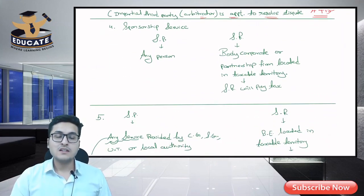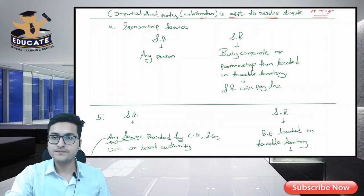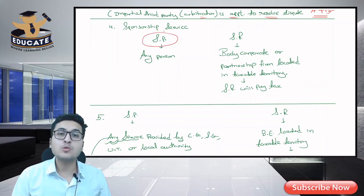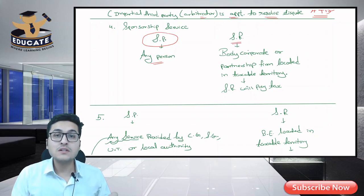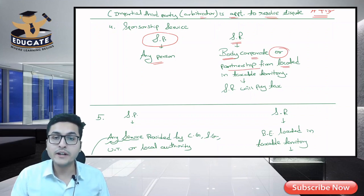Next is sponsorship service. Who is the service provider? The service provider can be any person. Who is the service receiver? The service receiver should be a body corporate or a partnership firm located in taxable territory.